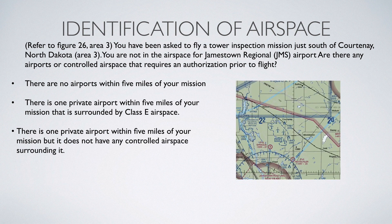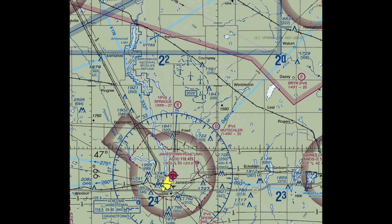Like I always do with these sectional questions, I'm going to point you to the sectional legend first. We need to compare the symbols in the area we're looking at against the sectional legend. If you look, there's an obstruction just north of Courtenay with a height of 1,781 feet MSL. Just south of Courtenay, it looks like there's an obstruction with an elevation of 1,843 feet MSL. Looking a bit further south, we can see that there's an R in a magenta circle and next to it the words PVT Sprague — that's the name of the airport. The sectional legend has a whole portion that deals with airport symbols. The R in a circle means private, so it's a non-public airport and it really just has emergency use or landmark value.